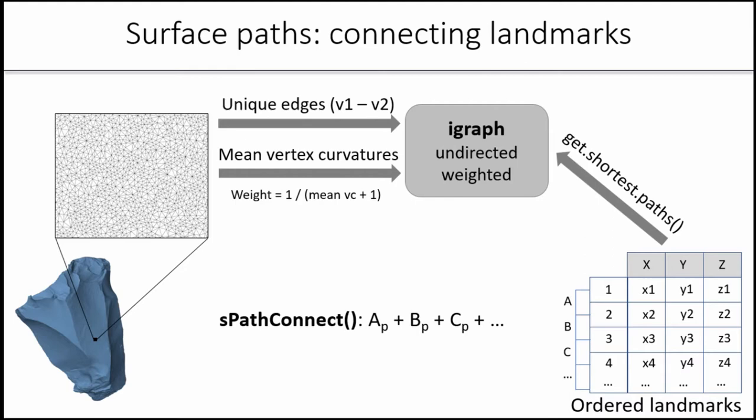What this does is it takes this mesh object, extracts the edges that compose the triangles on the surface, and then creates an iGraph object which has weights associated with each edge. This weight is the reciprocal of the mean curvature of the vertices that define that specific edge. Using the reciprocal means that when you have zones with very high curvature values, you have very low weights, meaning those edges are very easy to traverse. When you have very low curvature values, so a flat surface, you will have very high weight. Essentially, you're penalizing flat surfaces. This SPATH Connect function basically connects landmarks in pairs, landmark 1 to landmark 2, landmark 2 to landmark 3, and so on, and uses this distances function from the iGraph package to compute shortest paths on the surface.